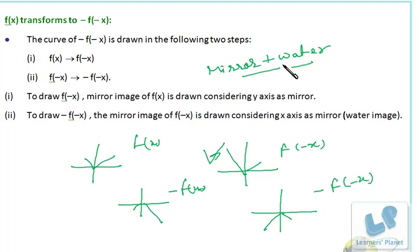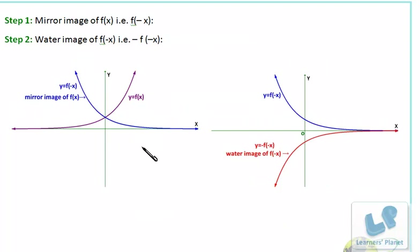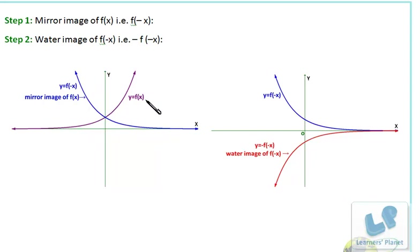Here is an example: from f(x) we convert to f(-x), then from f(-x) we convert to -f(-x) — that would be the water image of f(-x). This purple line is the actual graph of f(x), this blue line is the graph of f(-x), and the inversion of f(-x) along the x-axis gives the graph of -f(-x) — that is this red line.